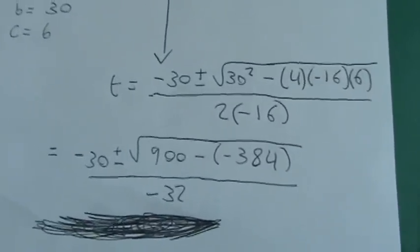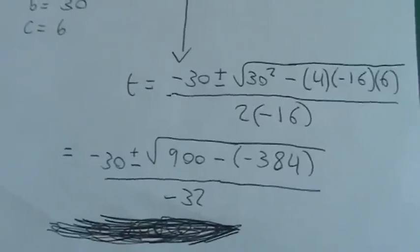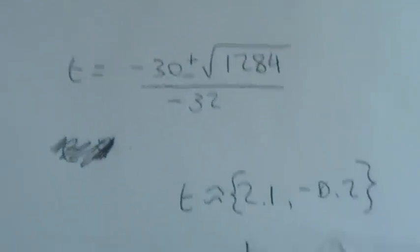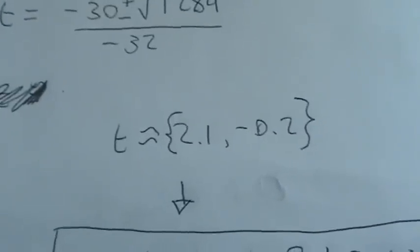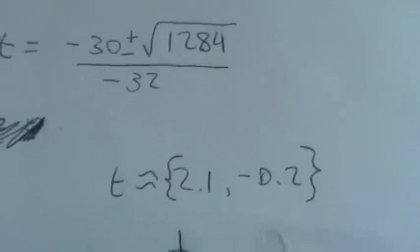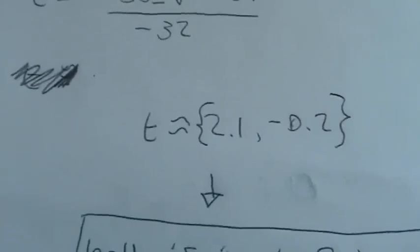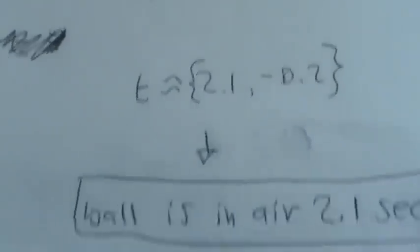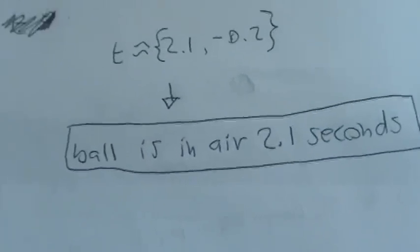When you plug in all of the variables and continue to solve, you find that t can either be 2.1 seconds or -0.2 seconds. Obviously, -0.2 seconds does not make sense, so the ball is in the air for 2.1 seconds.